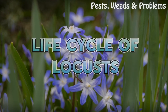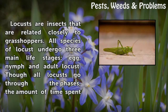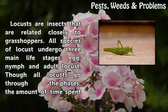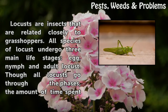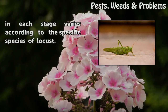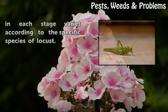Life Cycle of Locusts. Locusts are insects that are related closely to grasshoppers. All species of locust undergo three main life stages. Though all locusts go through the phases, the amount of time spent in each stage varies according to the specific species of locust.